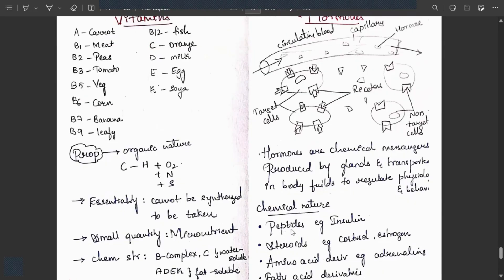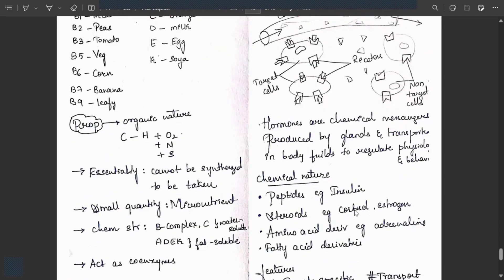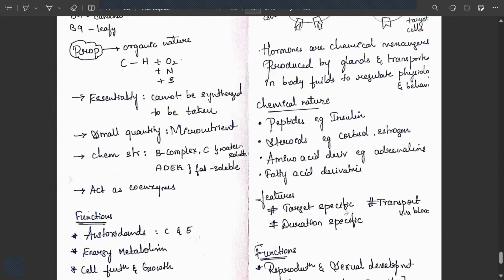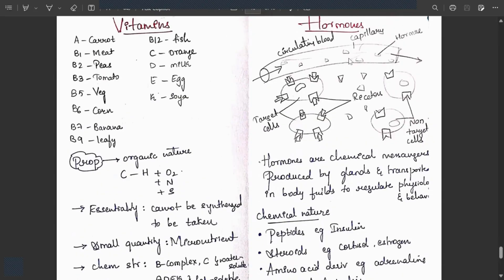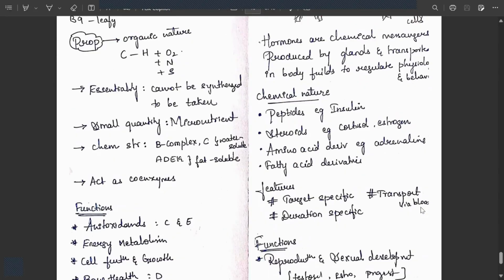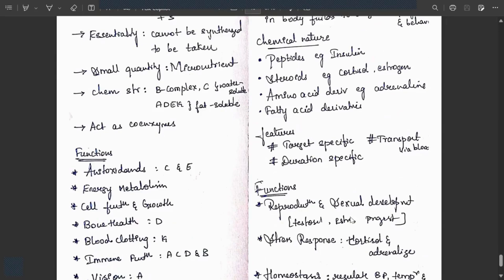Chemical natures: peptides like insulin, steroids like cortisol and estrogen, amino acid derivatives like adrenaline, fatty acid derivatives. Features: target specific, binding only to target cells. Transported via blood. Duration specific.